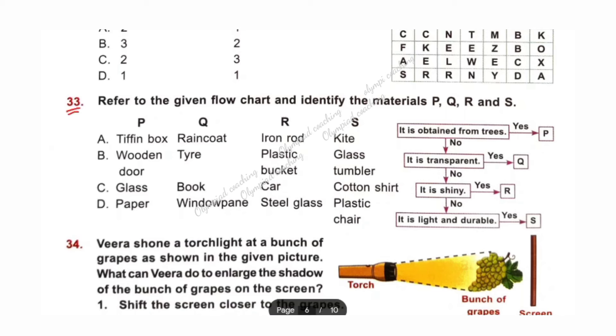Question number 33. Refer to the given flowchart and identify the materials P, Q, R and S. This is the flowchart. P could be paper or wooden door because both are obtained from trees. So option B and D correct. A and C cancelled. Q is window pane because window pane is made up of glass. This is transparent. Tire is not transparent. So option D is correct. Similarly R could be steel glass because steel glass is shiny. S could be plastic chair. Plastic is light and durable. So option D is correct.